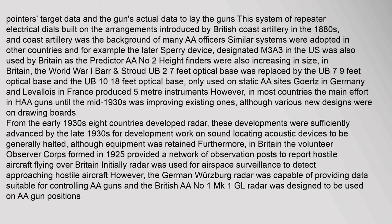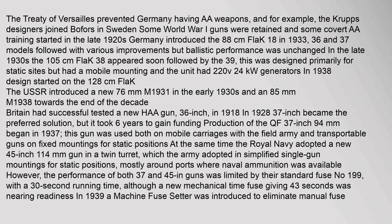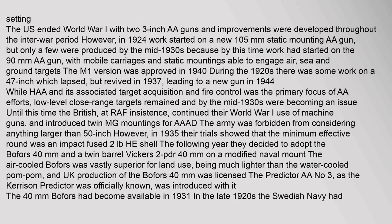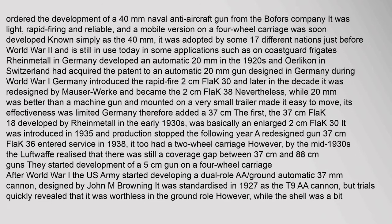The Treaty of Versailles prevented Germany from having AA weapons; Krupp's designers consequently joined Bofors in Sweden. Some World War I guns were retained and some covert AA training started in the late 1920s. Germany later introduced the 88mm gun. The US ended World War I with two 3-inch AA guns, and improvements were developed throughout the interwar period; in 1924, work started on a new 105mm gun.